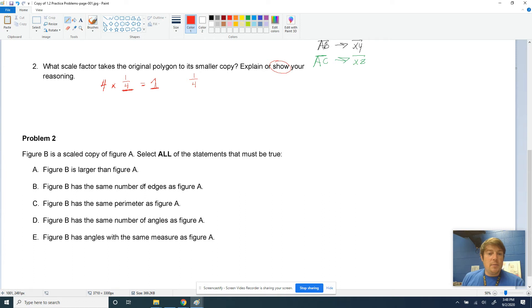Figure B has the same number of edges as figure A. Let's draw a picture just to kind of get through this. If we have scaled copies, that means it's the same shape, which means they're going to have the same number of edges or like this. One, two, three, four. One, two, three, four. So it has the same number of edges. So that is true. They're going to have the same number of sides and edges because they're the same shape.